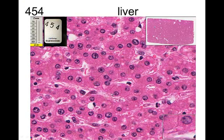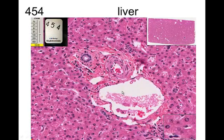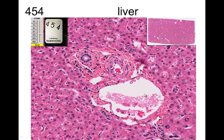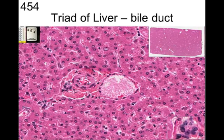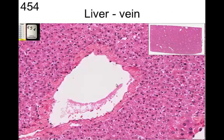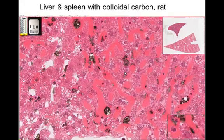Looking at the slide, we can see individual hepatocytes with the nucleus, the heterochromatin, the lighter-staining euchromatin, and distinct nucleoli. The sinusoid runs through there, bathing these hepatocytes. If you go to one of the regions outside the lobule, you'll see what they call a triad: a bile duct, an artery, and a vein. This would be a branch of the hepatic portal vein coming from the intestine. In contrast, the center of the lobule has a central vein.